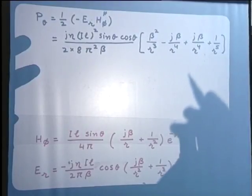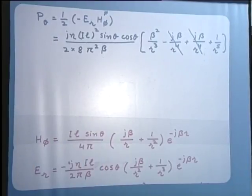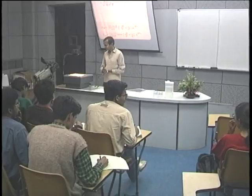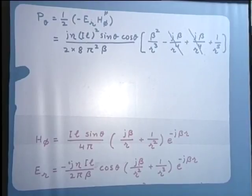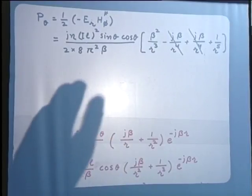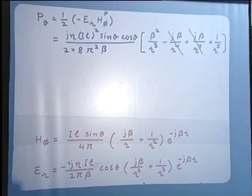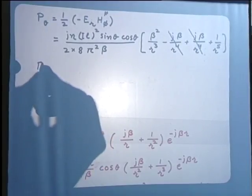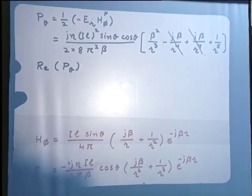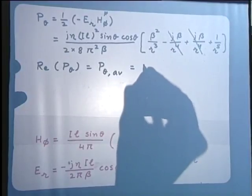As far as these terms are concerned, the imaginary pair cancels each other and drops out. When we consider the average power flow, we require the real part of the entire expression. Since there is a j term in front, the real part is zero for all distances. Therefore, the real part of P_theta — which is the average P_theta — is zero.